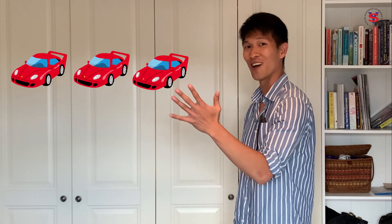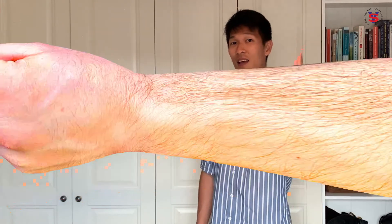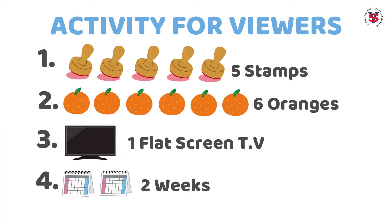So yun ang ating mga counters. Ang dami, di ba? Okay, so kayo naman mag-try ngayon. Ipapakita natin sa screen ang mga ilang bagay at sagutin natin ang tamang number with the right counter suffix. I'll start you off with the first one — nakikita natin ngayon sa screen, meron tayong tatlong kotse, so the right counter suffix is dai — san-dai. Now it's your turn! Write your answers in the comments section below.